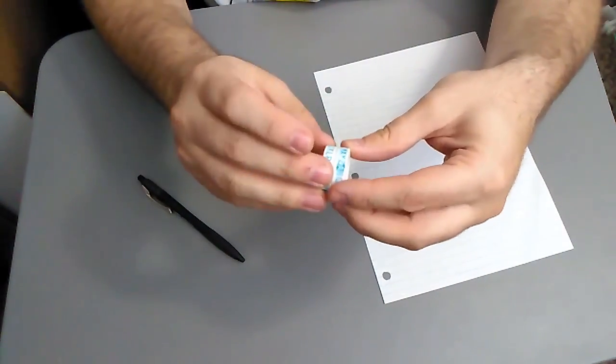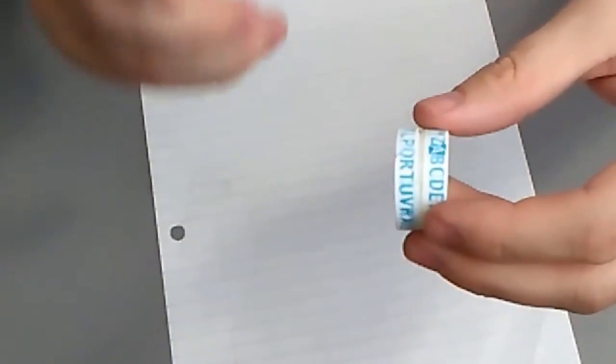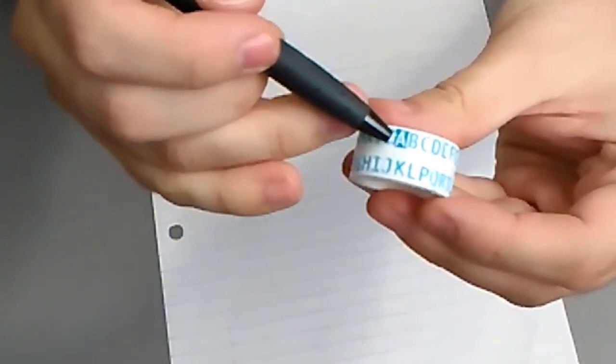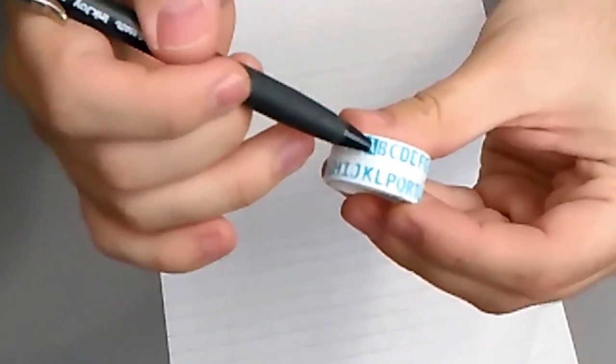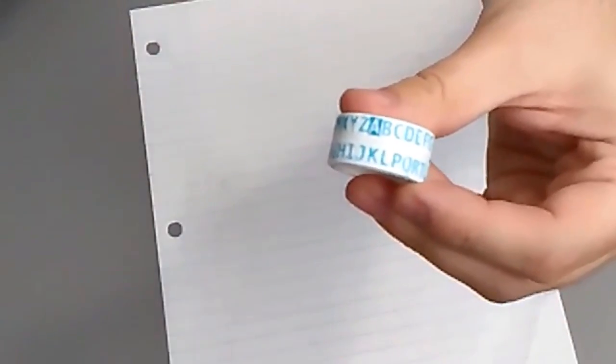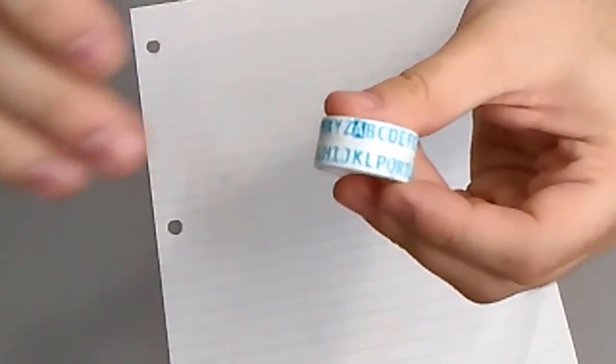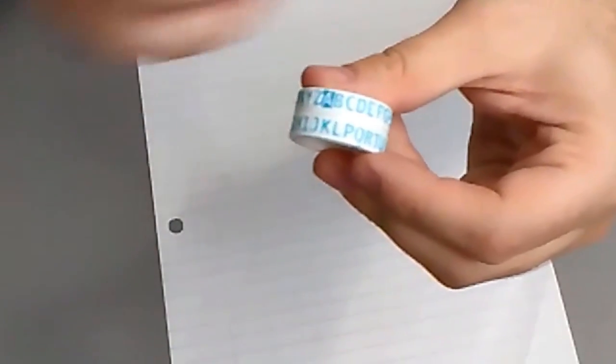Alright, so once you've got the ring working, here's how you use it. The first thing you have to do is choose a key. A key is just, you'll notice that on the top alphabet here, that the A has a, it's kind of in reverse and darkened. That's because that is telling you how to set up the key, and the key is any letter of the alphabet. You can't choose A, because then they would all line up.